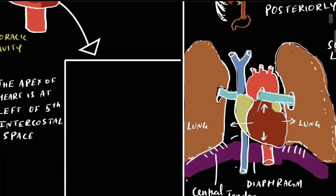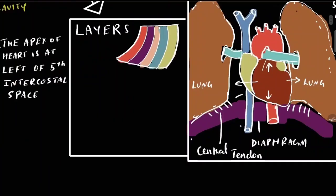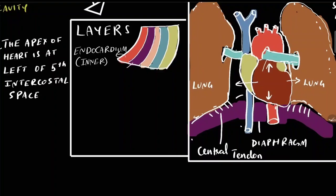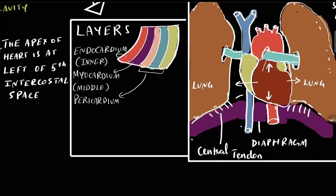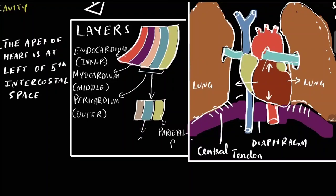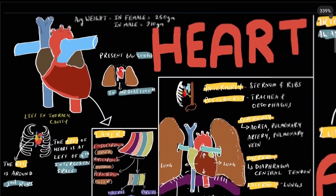The heart comprises three layers. The innermost layer is the endocardium, the middle layer is the muscular layer known as the myocardium, and the outer fibrous layer is the pericardium. The pericardium's outer layer is the parietal pericardium, the inner layer is the visceral pericardium, and in the middle you have the pericardial sac.